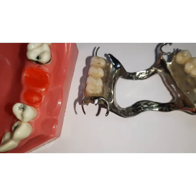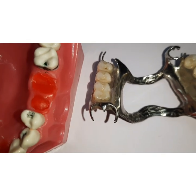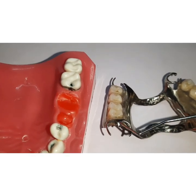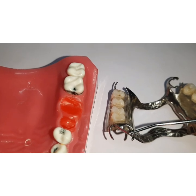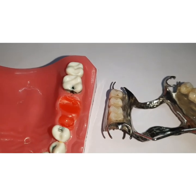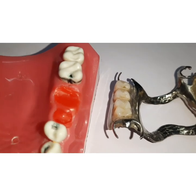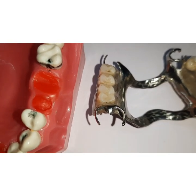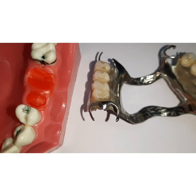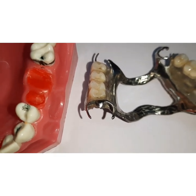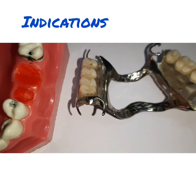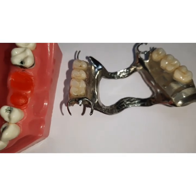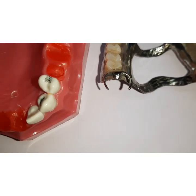On a cast partial denture, the cast circumferential clasp has a retention arm, a reciprocal arm, and a rest — all discussed in the last video on clasp assembly. Cast circumferential clasps are mostly indicated in a totally tooth-supported situation, like a Kennedy's Class 3 or Class 4 situation.